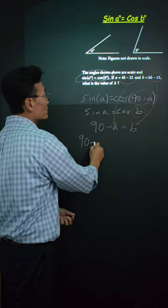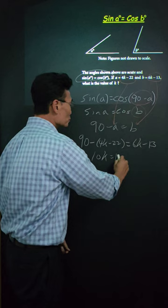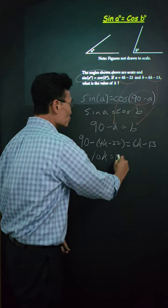So we get 90 minus 4K minus 22 equals 6K minus 13. If you simplify this, you'll get 10K equals 125, or K is equal to 12.5.